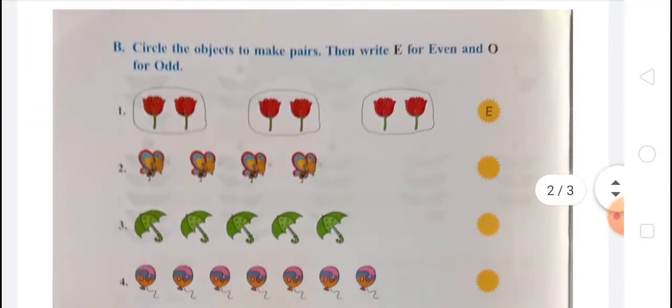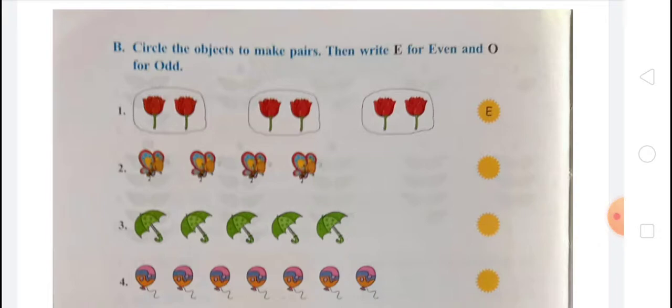Now, circle the objects to make pairs. You have to circle the objects to make pairs — that means which numbers are in pairs. Then write E for even and O for odd. In the first picture, you can make pairs of two, two, two. That is even because it is paired in groups of two. You will make two pairs, so the answer is even number.